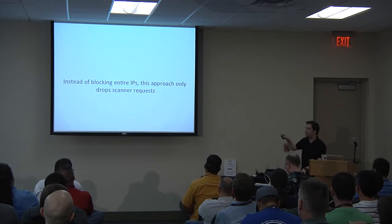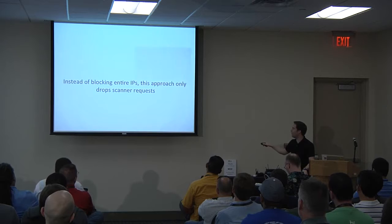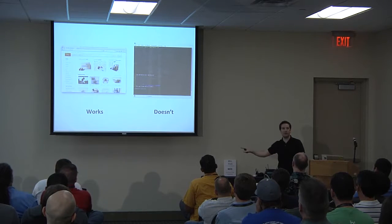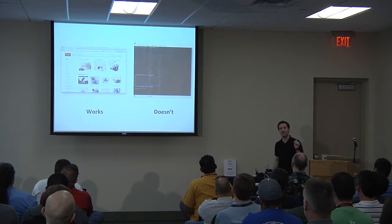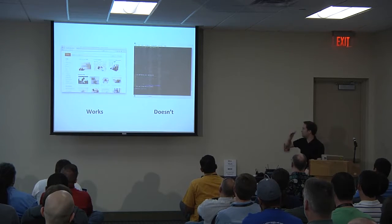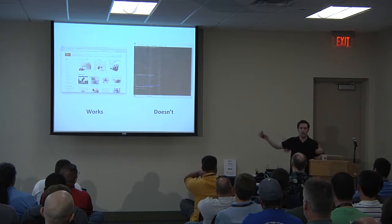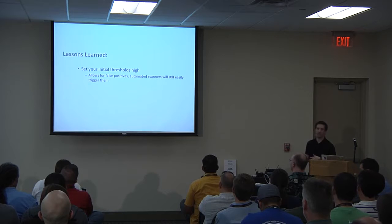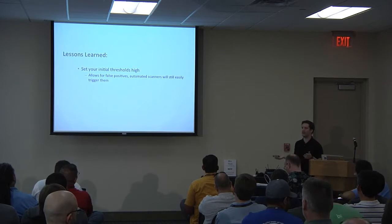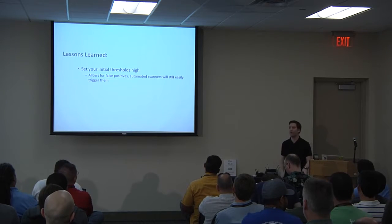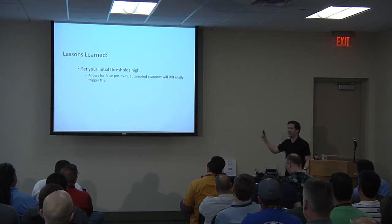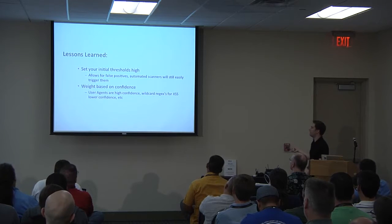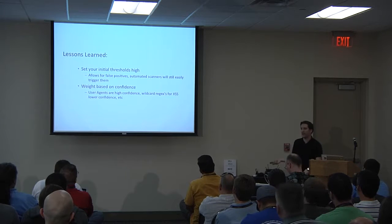Lessons learned: set your initial thresholds high. You don't care if a scanner gets 50 or 100 requests — what you're killing is the aggregate two-million-request scan. Your automated scanners are going to trigger enough to hit your thresholds anyway. Start high, work your way down if you feel comfortable. Weight based on confidence — some signals are high confidence, some are not. And be ready for the weirdness that is the internet.